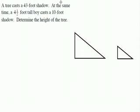Now the sun, the sun's angle is going to affect the shadow proportionally. Because it's going to hit them at the same angle since it's at the same time. So that's what makes it proportional. So the tree cast a 43 foot shadow. And a boy cast a 10 foot shadow, but we also know the boy is 4 and a half feet tall.